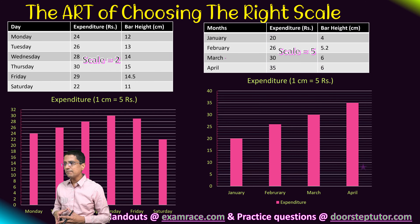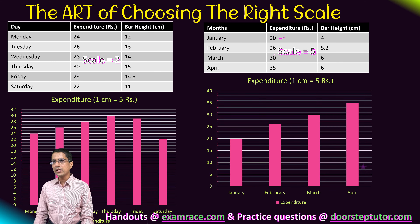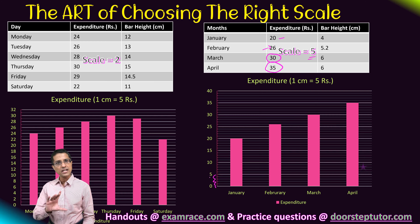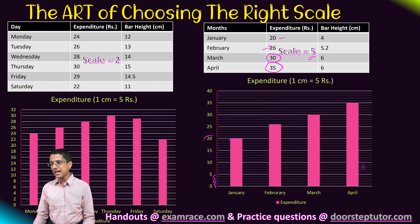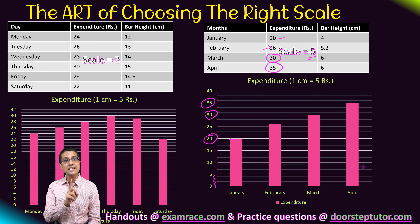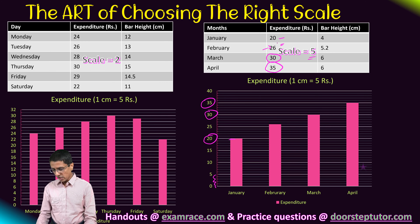Let's take another example. This time we have values 20, 26, 30, and 35. Most of these values — all except 26 — are actually divisible by 5. So we choose the scale as 5, meaning one division is worth 5 rupees. The y-axis marks are 5, 10, 15, 20, and so on. The first bar of 20 can be read directly from the y-axis. Values 30 and 35 also can be read directly. The only value that will give me trouble is 26, which falls between 25 and 30.